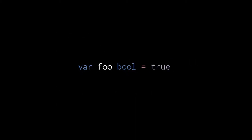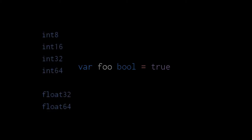Aside from strings, Go also has a boolean type called bool with two values, true and false. Where things get complicated is with numbers. In JavaScript we have just one number type, which is represented as 64-bit floating point, but in Go we have several different number types with different sizes. For integers we have four sizes: 8 bits, 16 bits, 32 bits, or 64 bits. For floating point numbers we have two sizes: 32 bits and 64 bits.